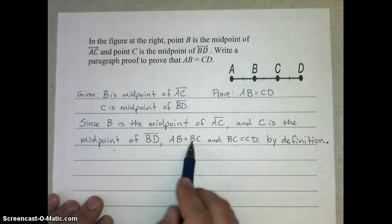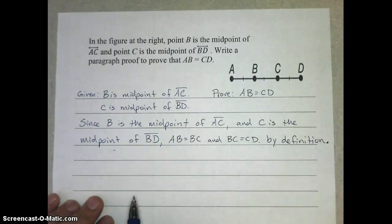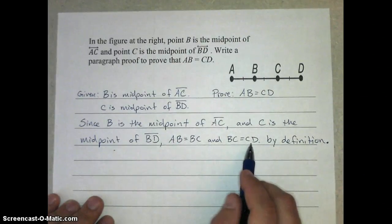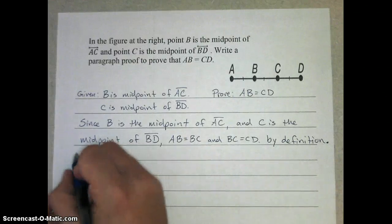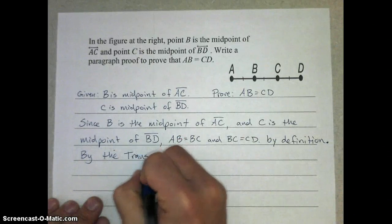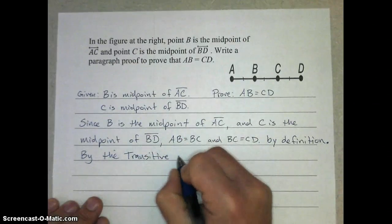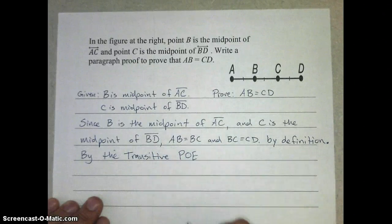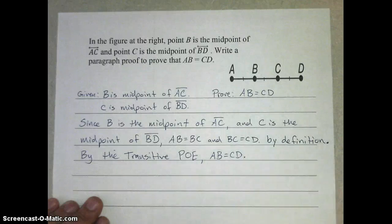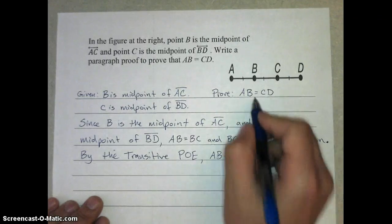So now that we know these two are equal and these two are equal, you might remember back to lesson 2.6 that we have a property that allows us to move from AB equaling BC to just the fact that AB has to equal CD. You might remember the name of that property is the transitive property. So I can start my next sentence like this. By the transitive property of equality, I can still abbreviate, and we have finished our proof because we have stated what it is we were trying to prove.